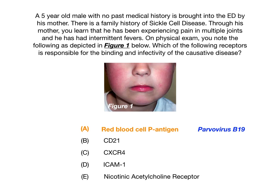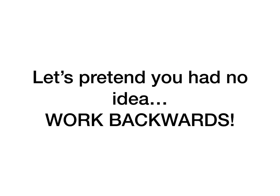You might be wondering how you were supposed to know that parvovirus B19 binds to the red blood cell P antigen. Unfortunately, this is something you have to memorize because it is fair game for USMLE and COMLEX. But let's say you had no idea — how would you get this question right? The approach is to work backwards from the answer choices.